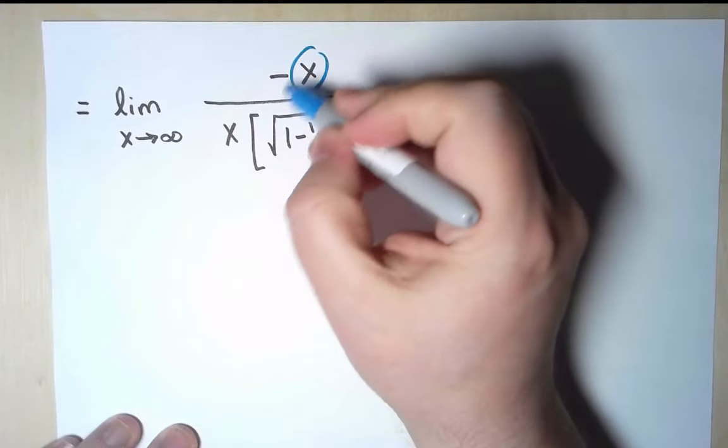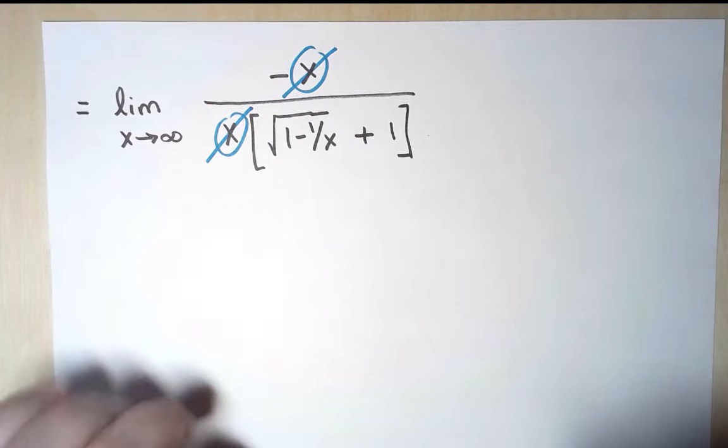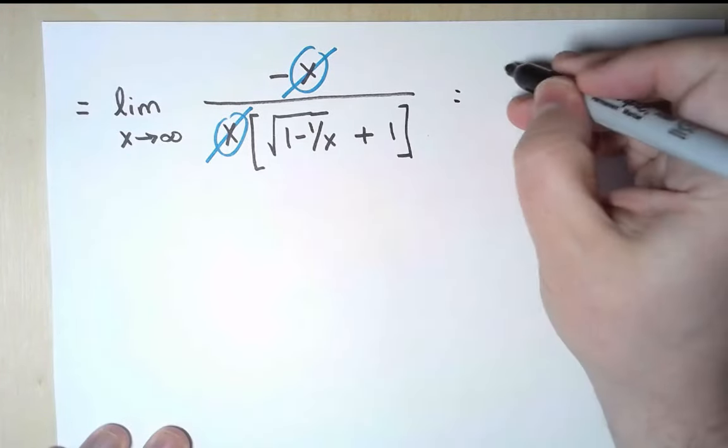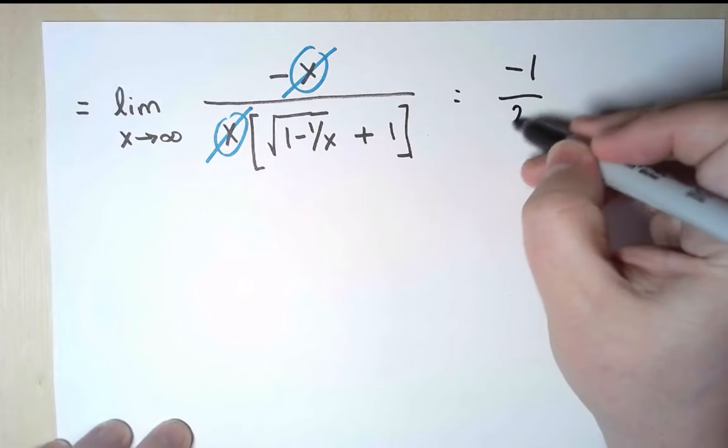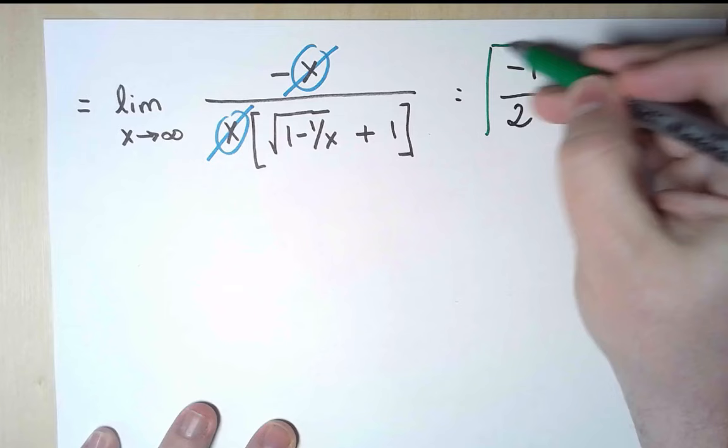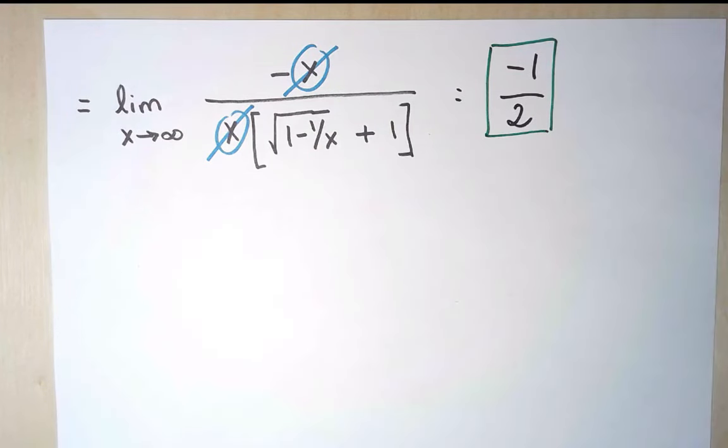The two terms with x cancel, and I am left with an expression where I know how to compute the limit. In the numerator, I have minus 1, and in the denominator, I have 2. So that is it. The final answer is minus 1 half, which is the same thing I obtained through the first method.